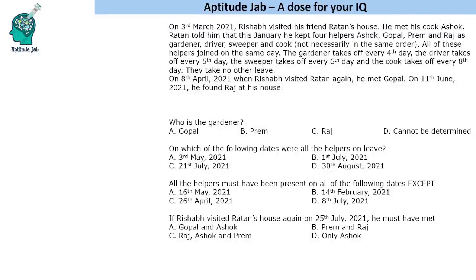Welcome to Aptitude Jab. This is a question based on calendar dates. On 3rd March 2021, Reshap went to his friend Ratan's house and met the cook Ashok. Ratan told him that in January he kept four helpers — Ashok, Gopal, Prem, and Raj — as gardener, driver, sweeper, and cook, not necessarily in the same order. All helpers joined on the same day. The gardener takes leave every fourth day, the driver every fifth day, the sweeper every sixth day, and the cook every eighth day, and they take no other leave.